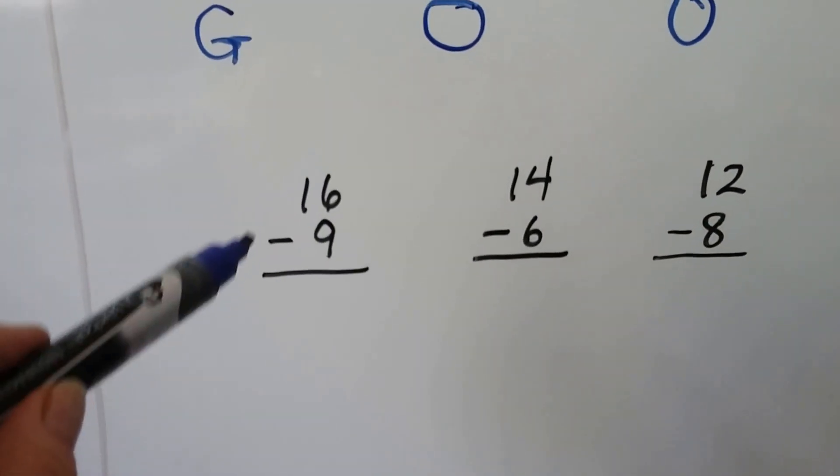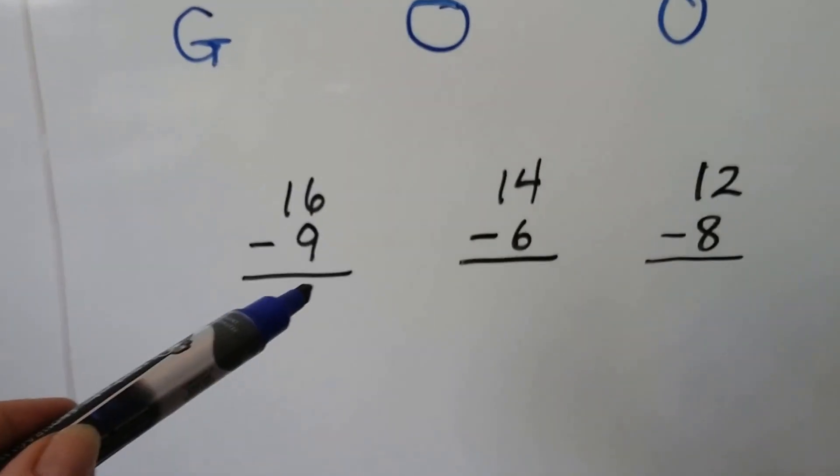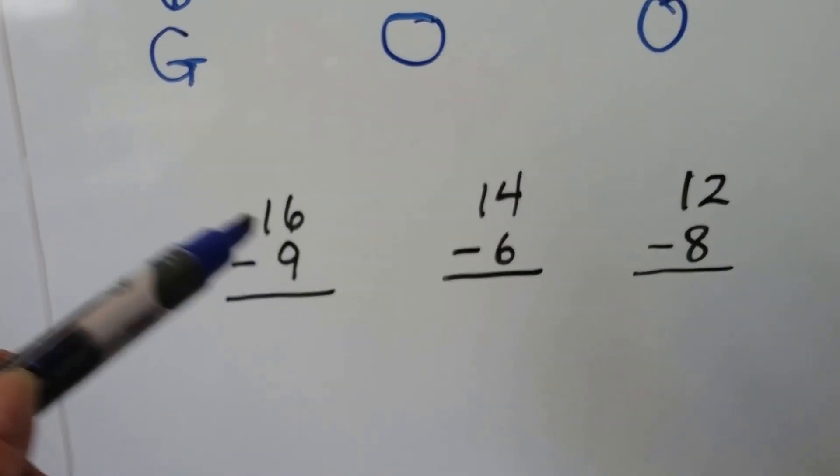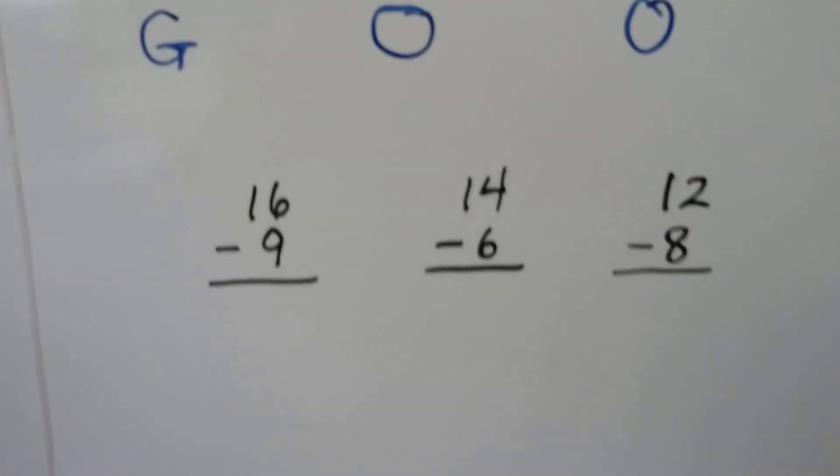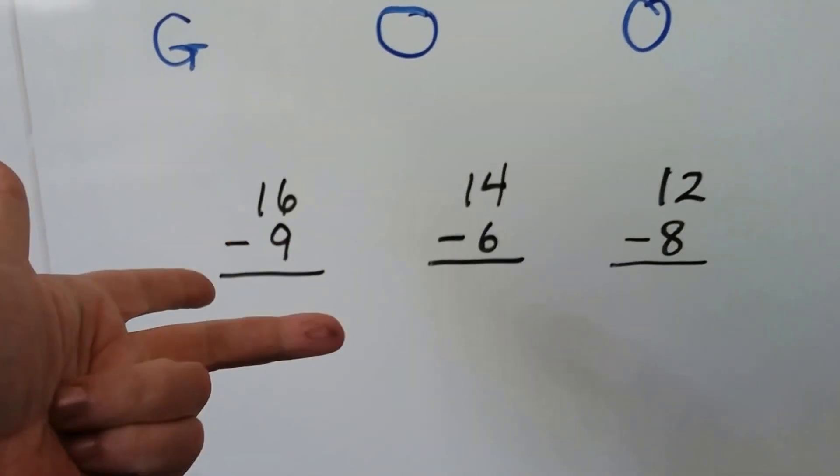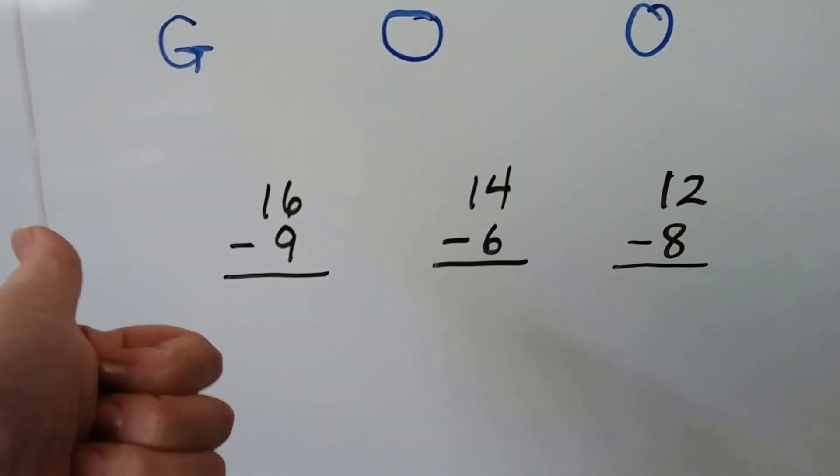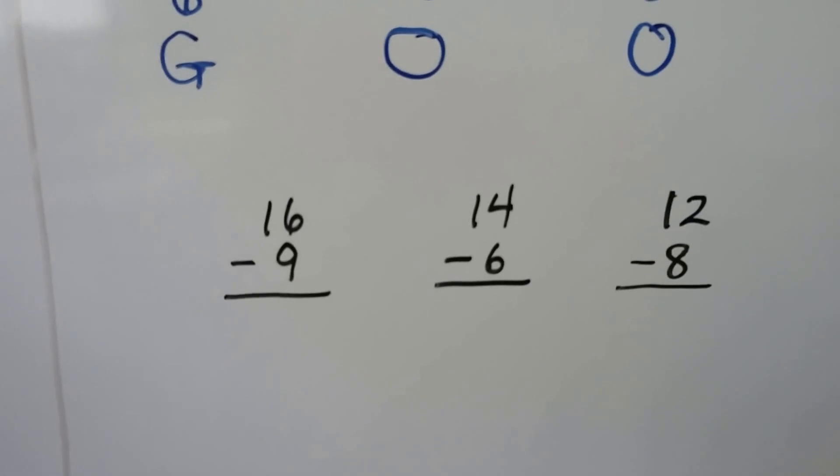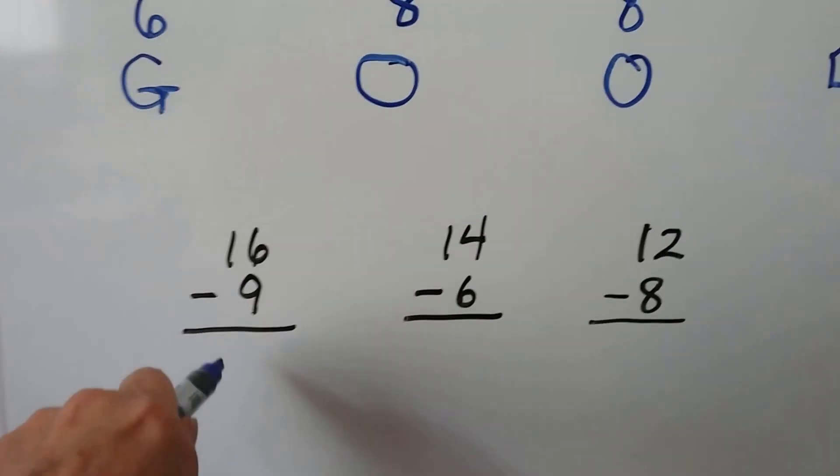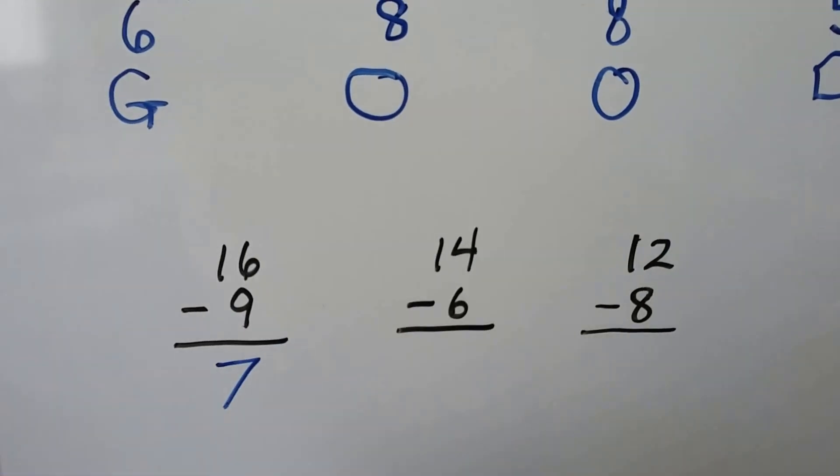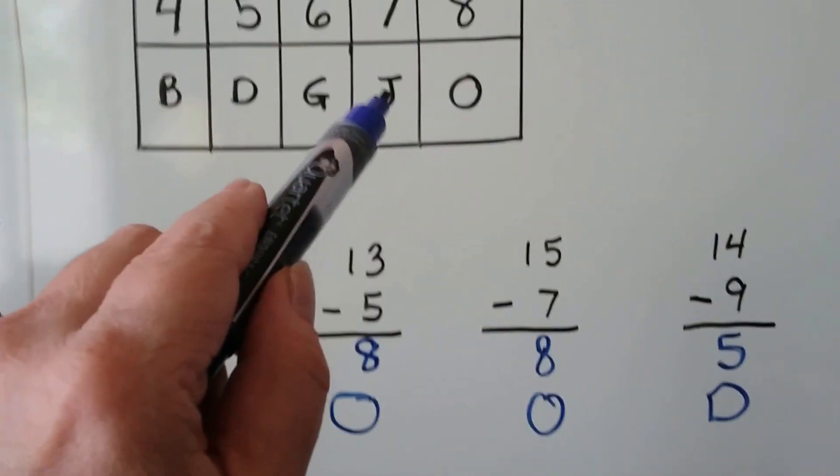Now we've got 16 minus 9. We can count back or we can count on. Let's try counting on. 9, 10, 11, 12, 13, 14, 15, 16. That's 7. And the 7 is a J.